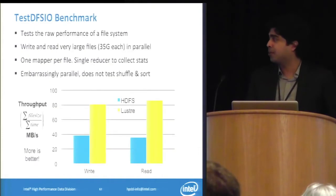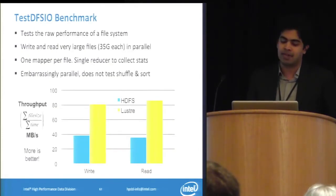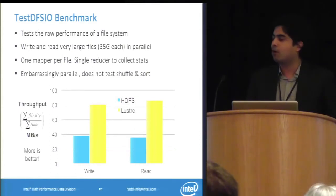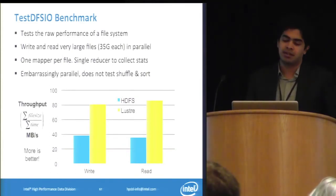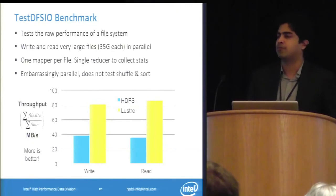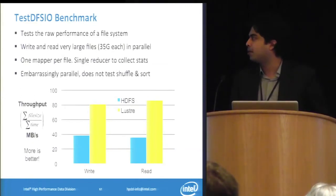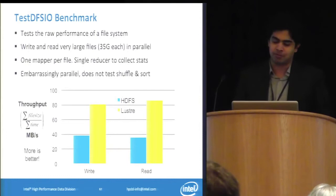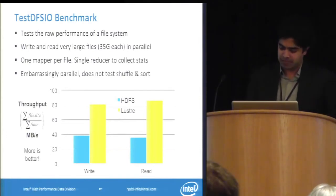The first benchmark was TestDFSIO — the distributed file system I/O benchmark — which tests raw sequential read and write throughput. We were expecting Lustre to outperform HDFS, and it did, by almost twice the performance of HDFS.